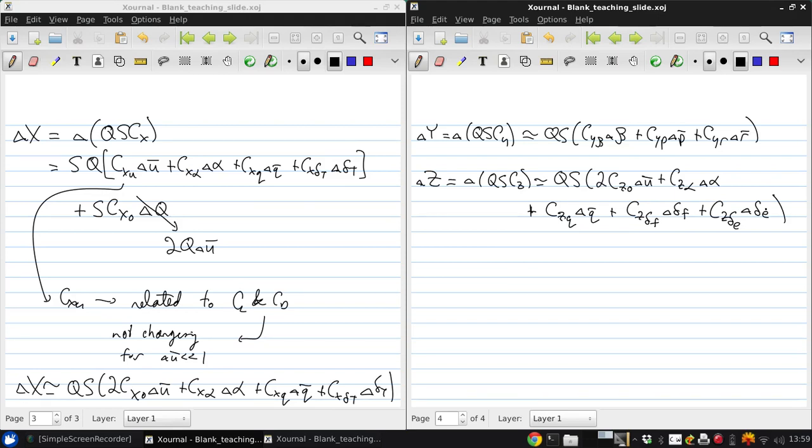Now for moment perturbations, Cl naught equals Cn naught equals zero for the trim state, so delta L, which is delta QSb Cl, will be approximately given by QSb times Cl beta delta beta plus Cl p delta p bar plus Cl r delta r bar plus Cl delta a delta delta a.